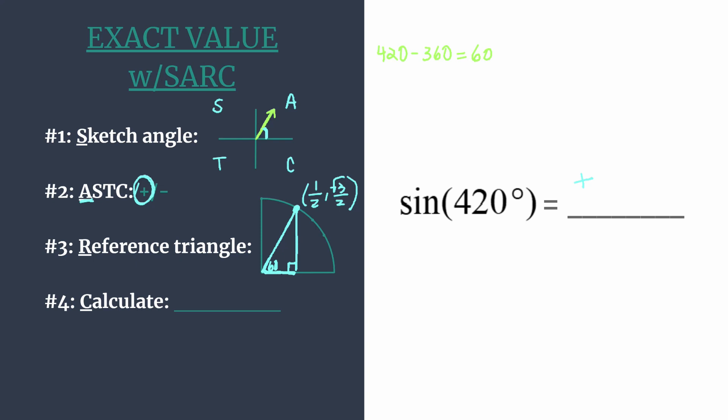All right, finally, step four, we're going to calculate. And there's actually not too much calculation to go on here with finding the sine of an angle. We know that the sine of an angle in the unit circle is simply going to be the y-coordinate. We already decided it was positive. It's in the first quadrant. And we know we just want the y-coordinate. So the sine of 420 degrees is positive square root of three over two.